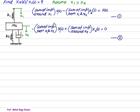To solve this type of problem, let us first assume that x1 is greater than x2. Since x1 is more than x2, our first variable is x1(s) and the second variable is x2(s). The first bracket consists of the sum of impedance around x1 multiplied by x1(s), minus the sum of impedance between x1 and x2 multiplied by x2(s), equal to f(s).